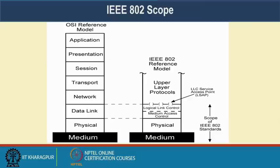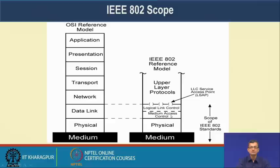To recap, the data link layer primarily consists of two things: LLC (Logical Link Control) and MAC (Medium Access Control). LLC is primarily responsible for upper layer negotiation and upper layer connectivity, whereas MAC deals with the physical layer. LLC has an LSAP (LLC Service Access Point), and MAC also has a MAC address, sometimes called a hardware address.